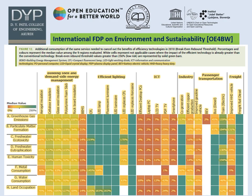In this particular table, we can see different sectors and what greenhouse gas emissions — meaning carbon emissions — they are causing, how they are polluting water, and what their material consumption levels are.